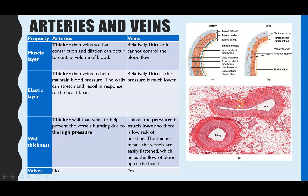An artery wall is much much thicker than a vein's, as you can see here. They both contain the same three tissue types but in different thicknesses. The muscular layer is much thicker in arteries compared to veins, so it can constrict and dilate to help control the volume of blood being pumped out of the heart. Veins are relatively thin so they don't have any control over blood flow.